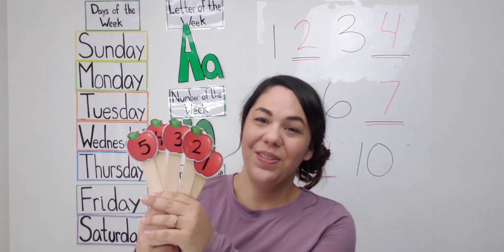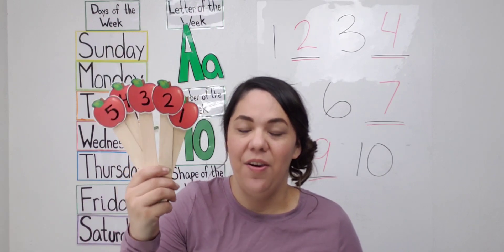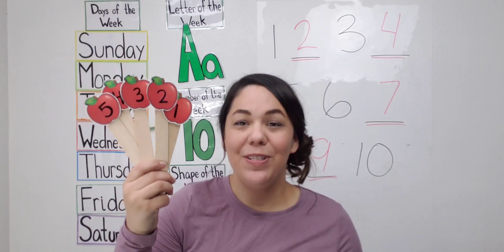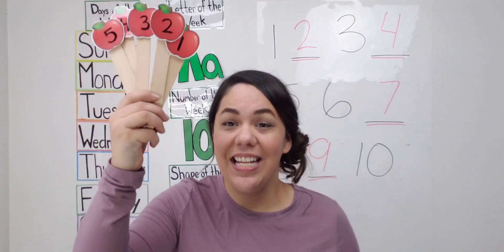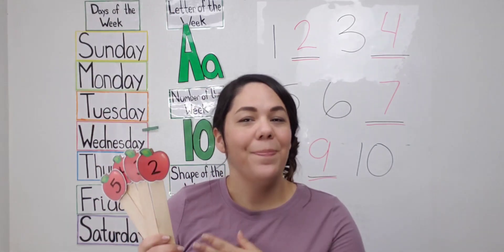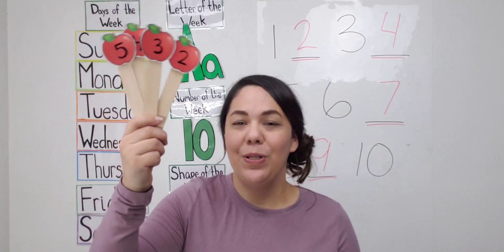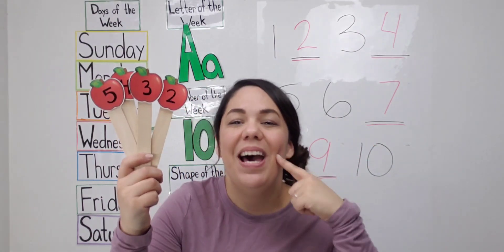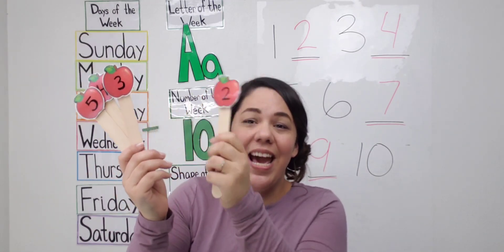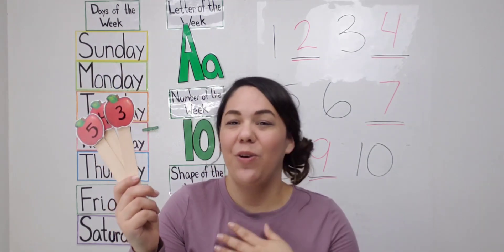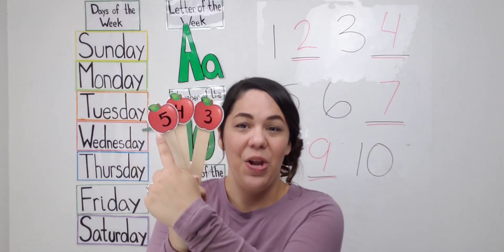Let's sing our Five Little Apples song. Way up high in the apple tree, five red apples smiled at me. I shook that tree as hard as I could, and down came one apple. Mmm, it was good. Way up high in the apple tree, four little apples smiled at me. I shook that tree as hard as I could, and down came an apple. Mmm, it was good. Three are left. Let's count together: one, two, three.